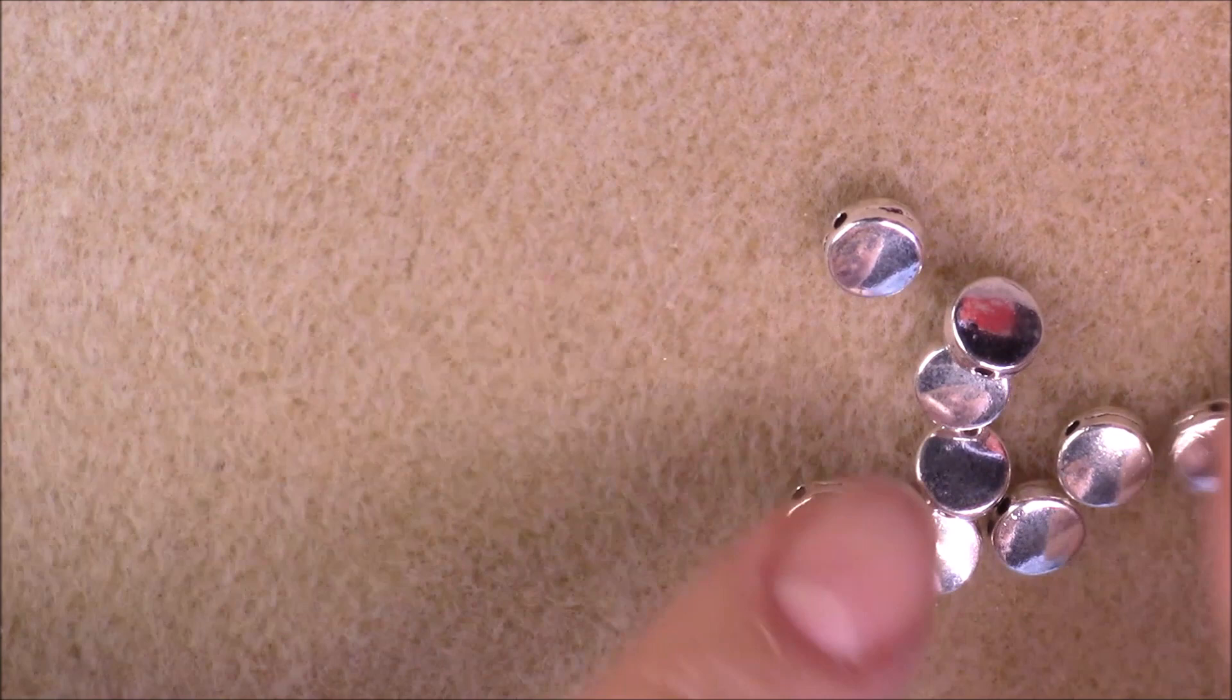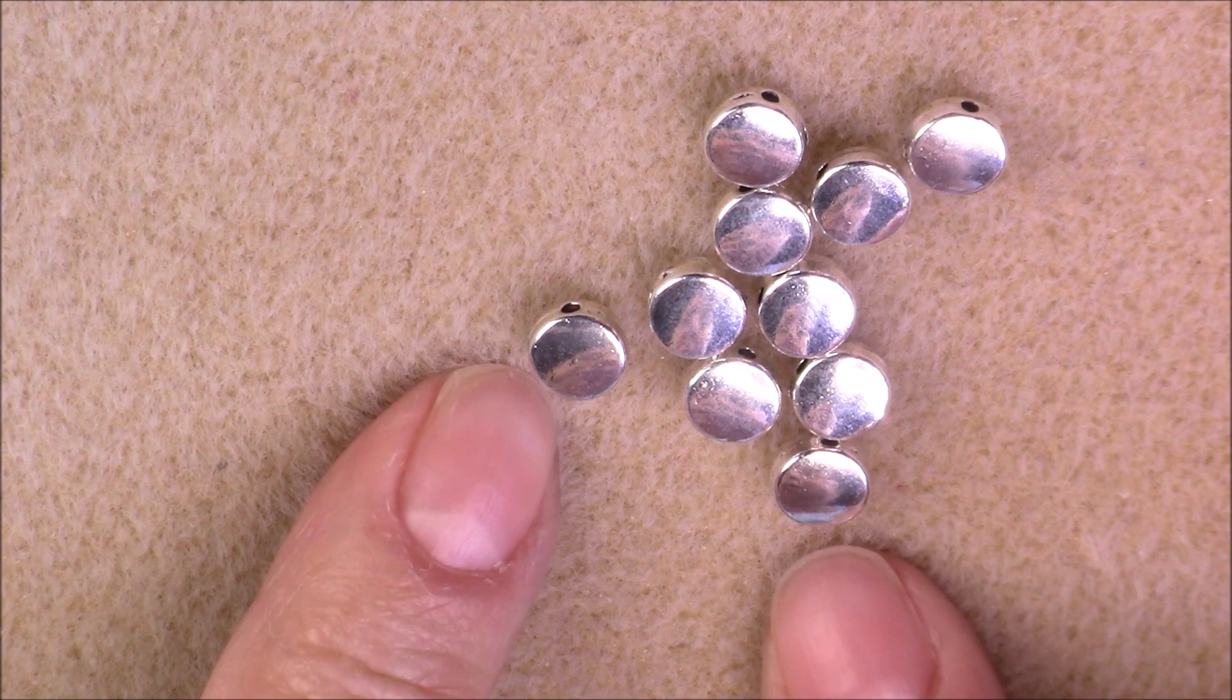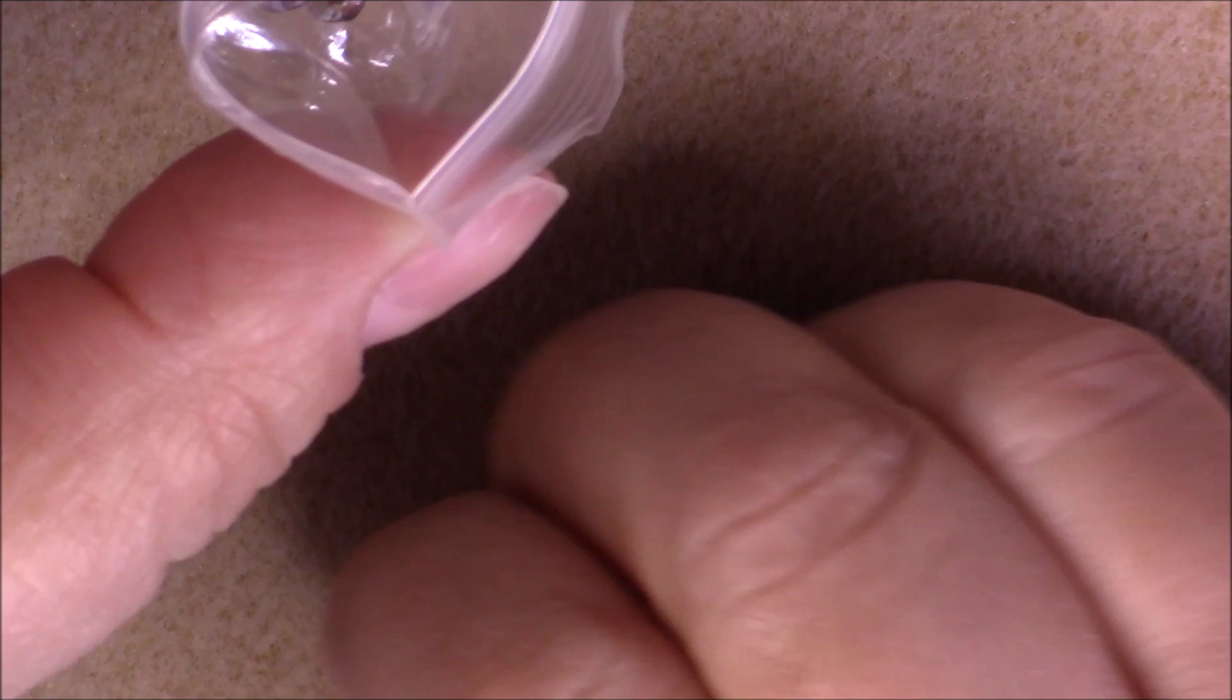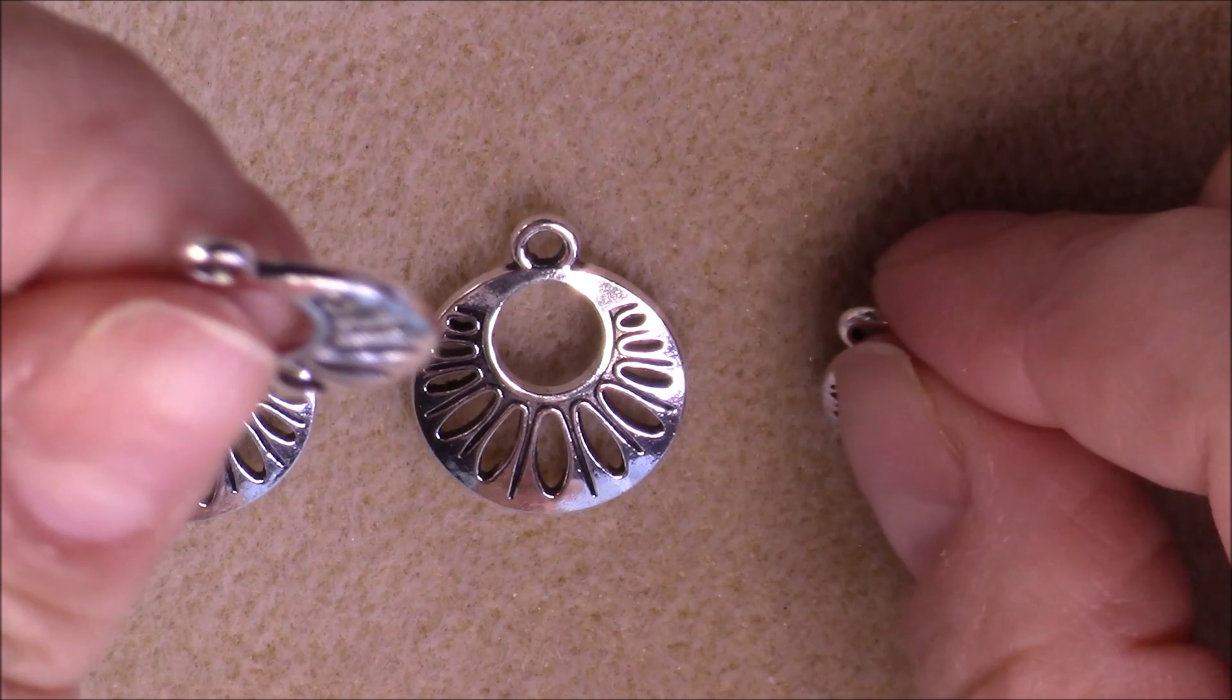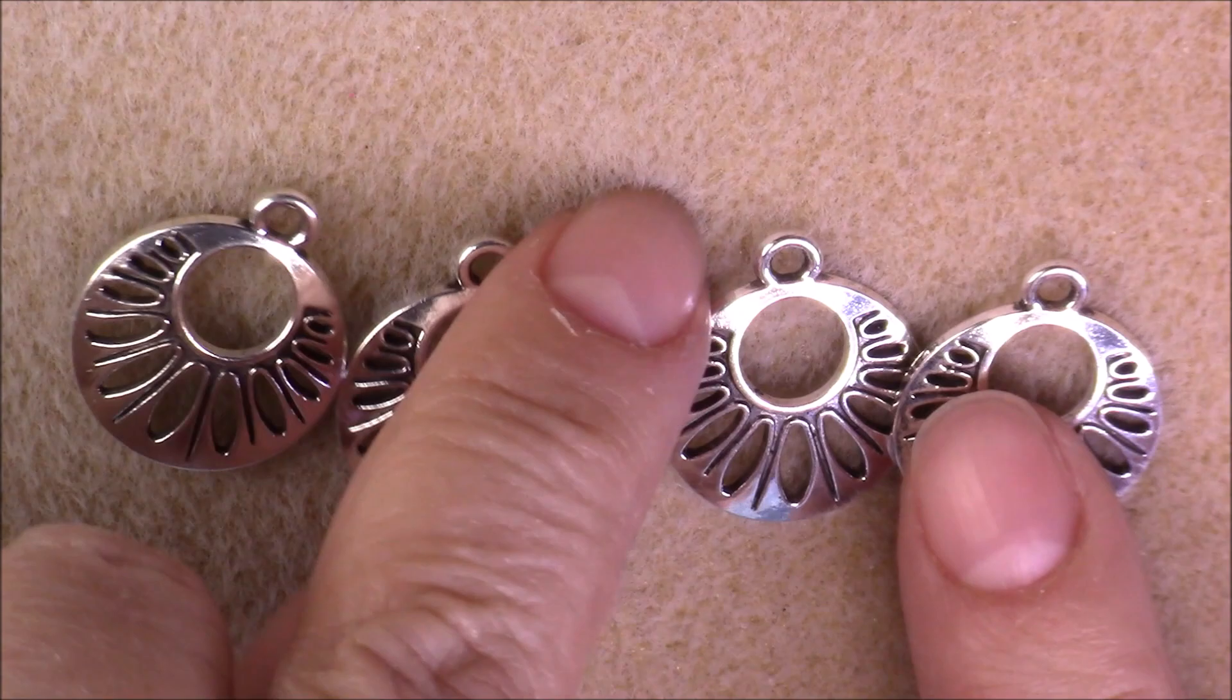And number 14. 14 is a 10-gram bag of 7mm coin spacer beads, and that is what they look like. It's the same on each side. Number 10. 10 is a four-piece 23x18 cut out round drops, and there we go. These are pretty. It's going to make some great earrings. Very nice.